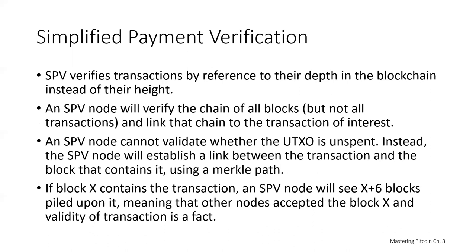SPV nodes verify transactions using a slightly different method that relies on peers providing partial views of relevant parts of the blockchain on demand. As an analogy, a full node is like a tourist in a strange city that has a detailed map of every street and every address. By comparison, an SPV node is like a tourist in a strange city asking random strangers for directions while knowing only one main road. Although both tourists can verify the existence of a street by visiting it, the tourist without a map doesn't know what lies down any of the side streets and doesn't know what other streets exist — and can't tell if there are a dozen other addresses with the same name in the city.